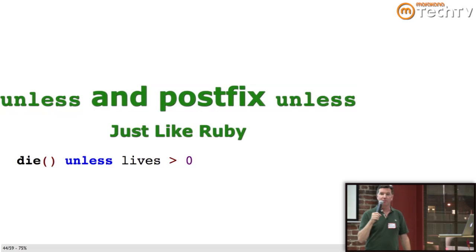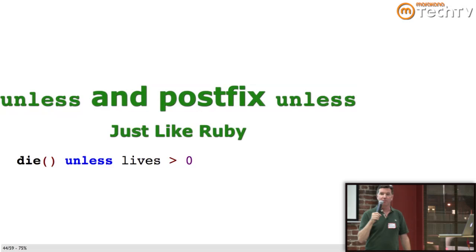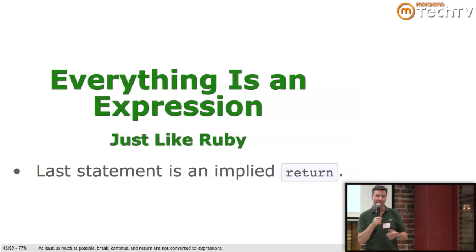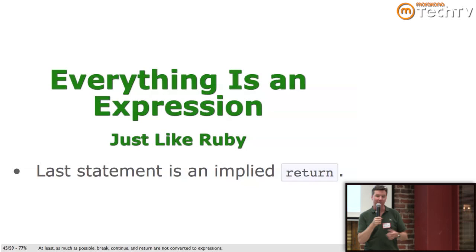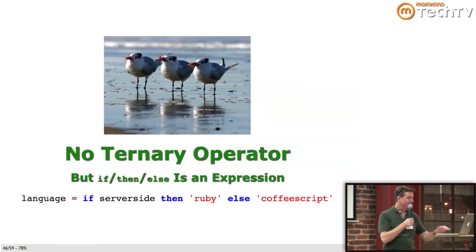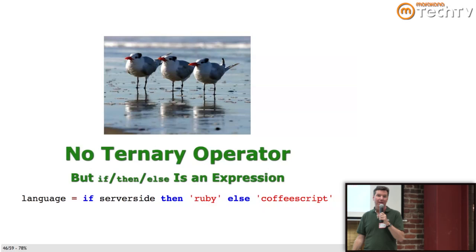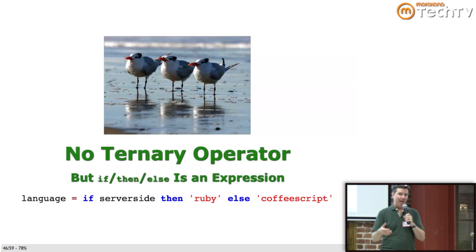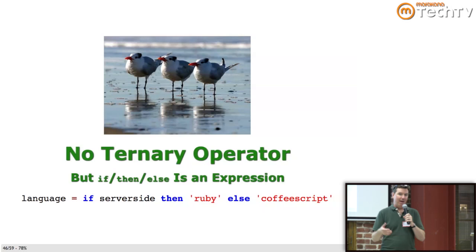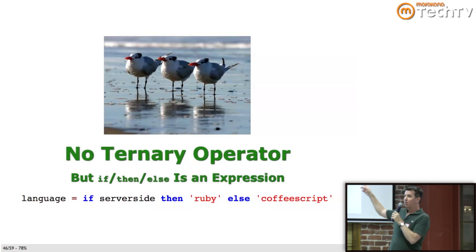CoffeeScript has postfix if, just like Ruby. It has unless and postfix unless, just like Ruby. Everything is an expression, just like Ruby — so the last statement of a method is an implied return. There's no ternary operator with question-mark-colon syntax, but just like Ruby, if-then-else on one line or across multiple lines is an expression. So you can do: language equals if server_side then Ruby else CoffeeScript — that's the equivalent of the ternary. And those birds are terns. Three of them. It's a ternary of terns.